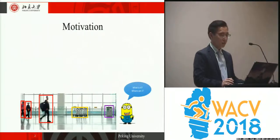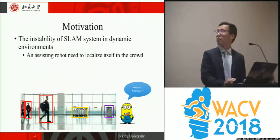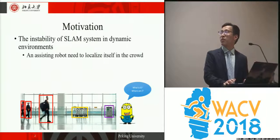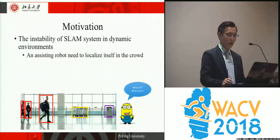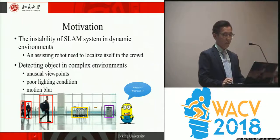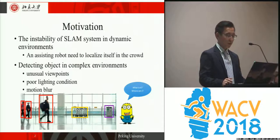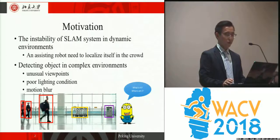Our paper aims to address two problems. The first one is the instability of SLAM systems in dynamic environments. For example, an assisting robot in the airport needs to localize itself in a crowd. The other is to detect objects in complex environments such as unusual viewpoints, poor lighting conditions, and motion blur.